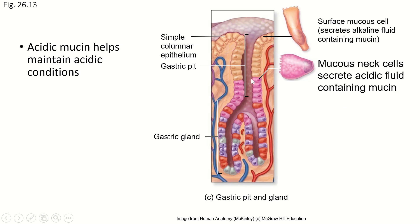The mucus neck cells create acidic mucin — they're deeper down in the gastric pit and they secrete an acidic fluid. This is not stomach acid; it's just a mucus-creating fluid that's a little more acidic.